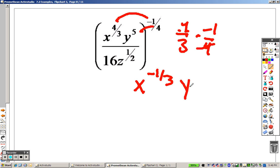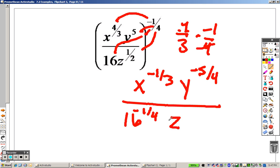Pull that through, I get y to the negative 5 fourths over, distribute that through, I get 16 to the negative 1 fourth. And multiply that through, I get z to the negative 1 eighth.